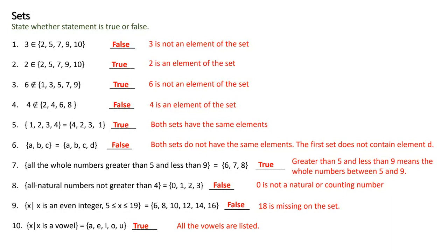Looking at number nine as set builder notation: x such that x is an even integer and x is greater than or equal to five, less than or equal to 19. The even numbers are six, eight, ten, twelve, fourteen, sixteen, and eighteen. Since eighteen is missing from the given list, this statement is false. Number ten: x such that x is a vowel. Our vowels are A, E, I, O, U — so these two sets are equal.